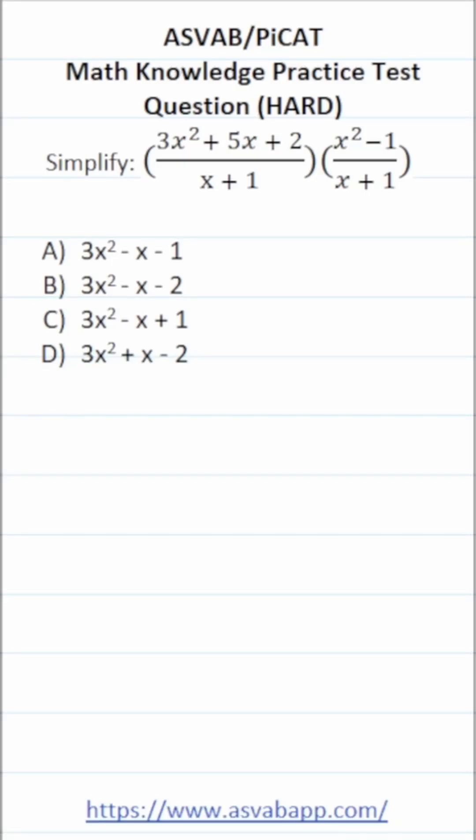This math knowledge practice test question for the ASVAB and PiCAT says simplify the expression 3x squared plus 5x plus 2 over x plus 1 times x squared minus 1 over x plus 1.